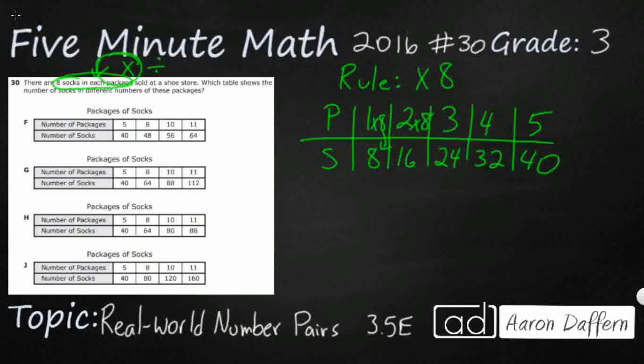Two packages times eight gets us 16 socks, three packages times eight gets us 24, and so on. Now we need to discover the rule for each of these tables and see which one has a times eight or multiply by eight rule, because that's going to give us the answer.